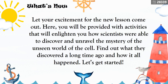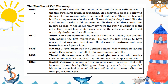This is the timeline of cell discovery. In 1665, Robert Hooke was the first person who used the term 'cells' to refer to the tiny structures found in organisms. He observed a piece of cork using a microscope he had made himself. He observed box-like compartments in the cork and thought they looked like the small rooms or cells of old monasteries, so he called these structures 'cells.' What Hooke saw were the outer boundaries of cells — they looked like empty boxes because the cells were dead, and he did not study further on the cell content.